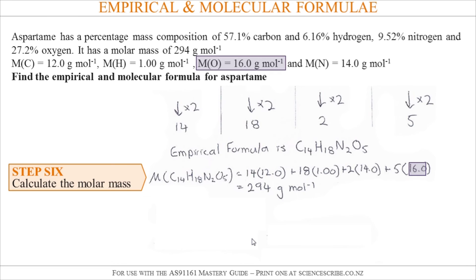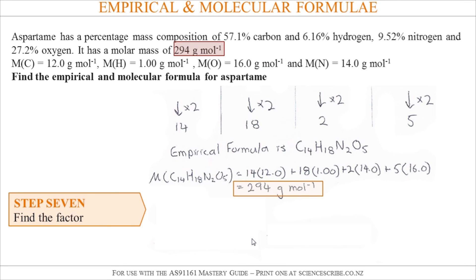The next step is to find the factor, and to do that we look at the molar mass of our original molecule in the question. That's the bit in red, 294 grams per mole, and we divide it by the molar mass of the empirical formula, the bit in orange, and that gives us exactly one.